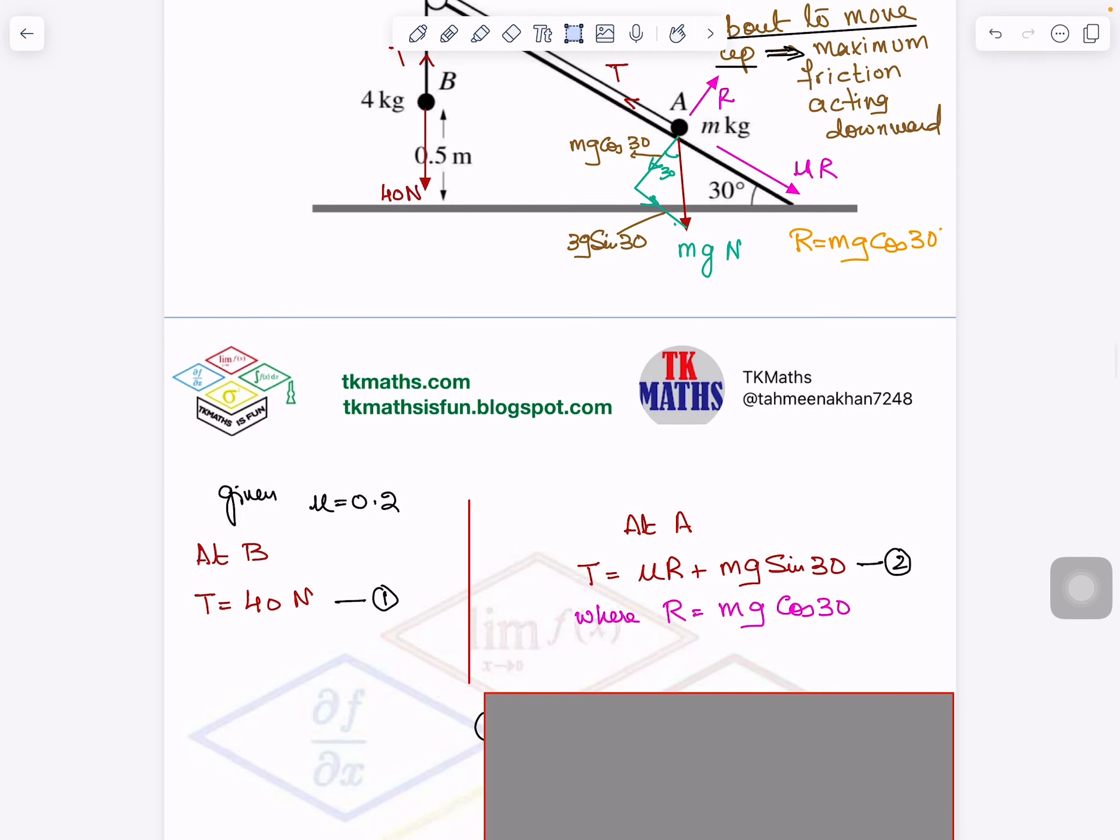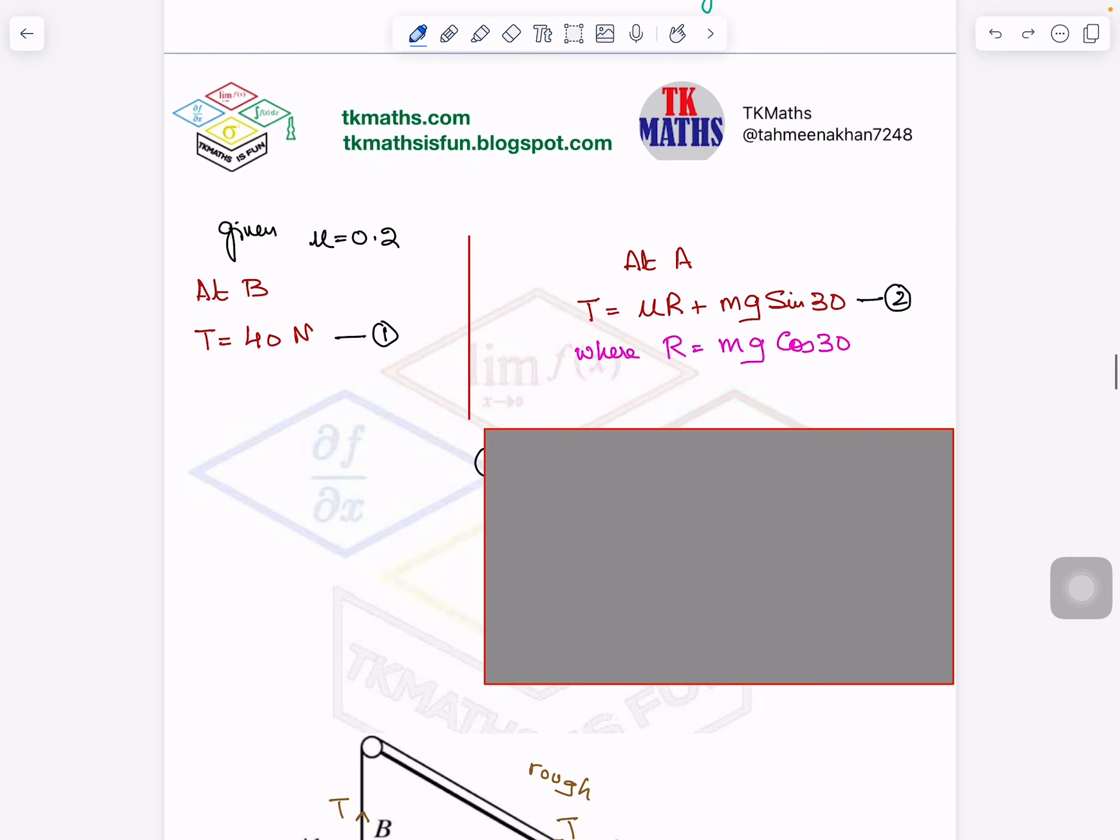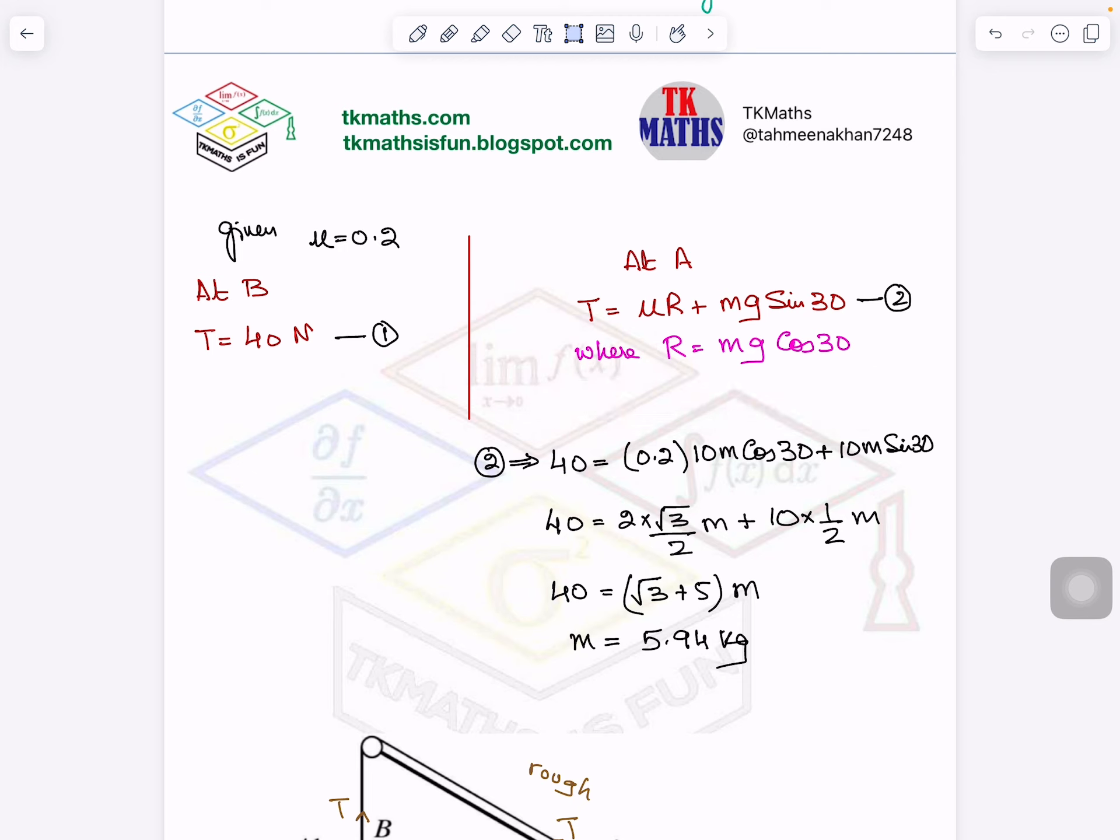At A, if you see, T which is acting upward, T equals mu R plus mg sin 30. This is what I have written here, because it is in equilibrium, so forces in the opposite direction are balancing each other. I have got two equations here, equation 1 and equation 2, and I am solving it simultaneously. I got the value of m which is 5.94 kg, and this was I have to shown, so I can write here shown.